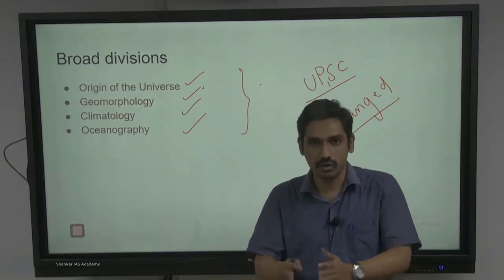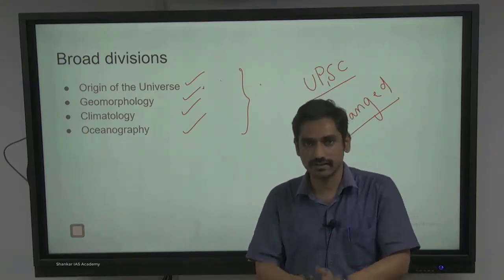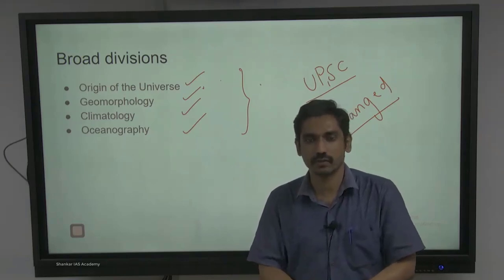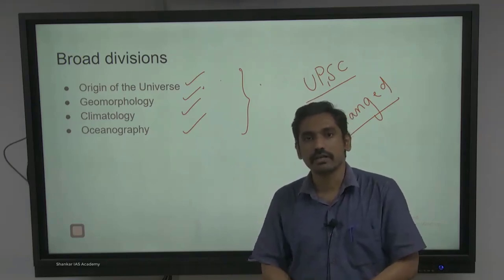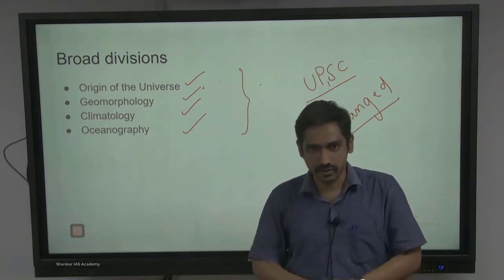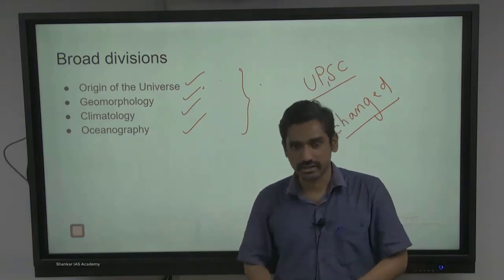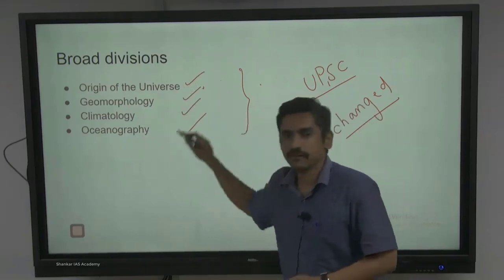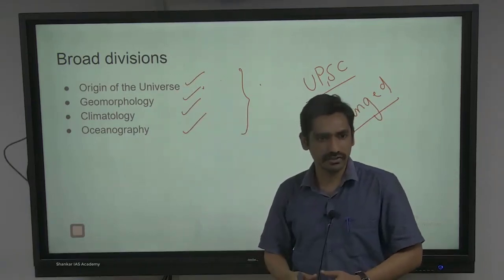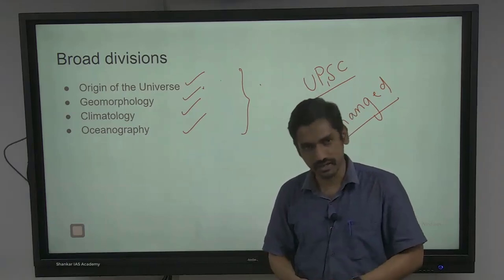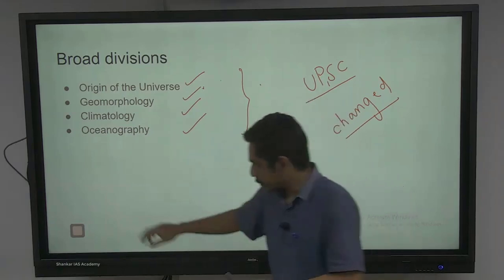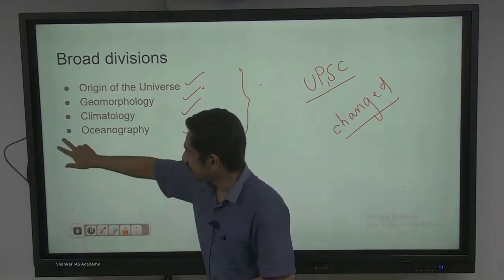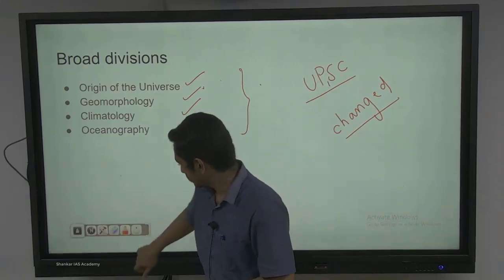In General Studies Paper 1, geography has the lion's share — you get 8 to 9 questions out of 20. But when it comes to the prelims perspective, apart from physical geography, there are several other domains in which questions can be asked. So for dealing with that, let's move to the next slide regarding the trend, and based on the trend, we'll be able to draw the boundaries properly.